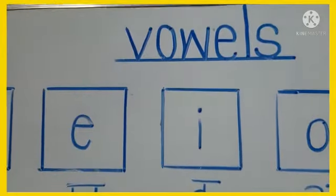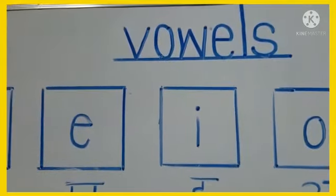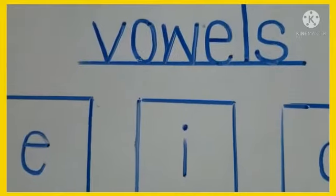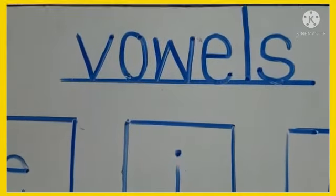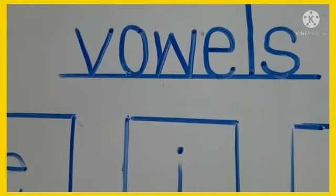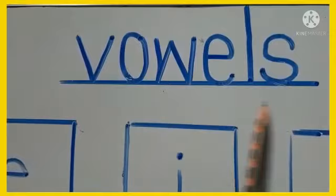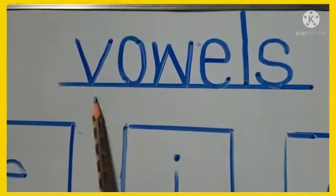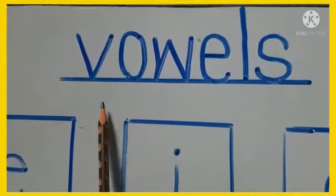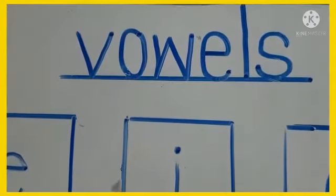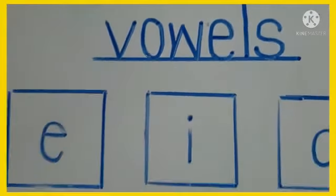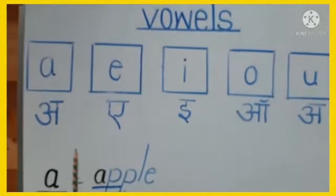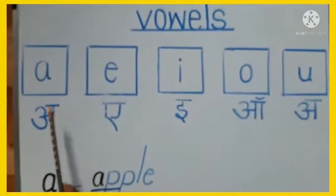Hello dear children, how are you all? I hope you all are fine and welcome in English class. In English we are learning about vowels — V-O-W-E-L-S. There are 5 vowels in English Alphabet, as you learnt in the last class.